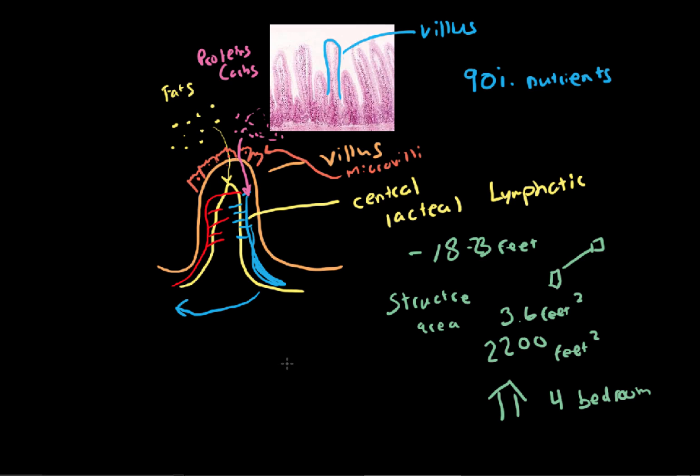And in addition to that, there's a lot of finger-like projections. You have these villi and microvilli throughout the small intestine. That's what's going to allow it to absorb all these fats, proteins, and carbs.